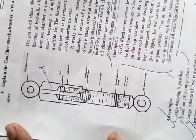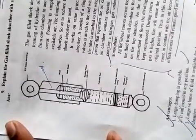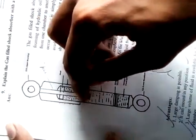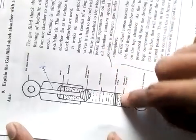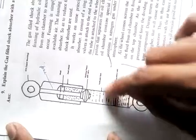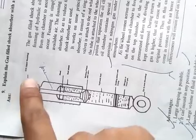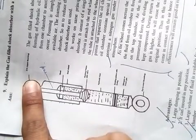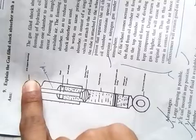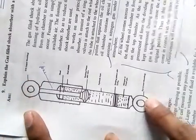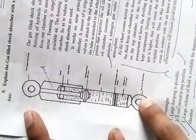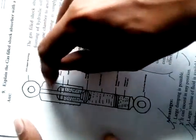This is a piston with a rod. The tube is filled with hydraulic oil and nitrogen with a divider. This part is connected to the chassis, and this is connected to the wheel. This is how it works. And this is a dust shield.